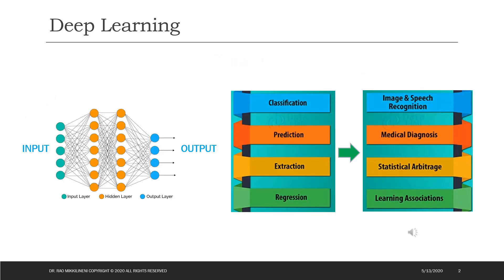Deep learning has delivered a variety of practical uses in the past decade, from revolutionizing customer experience, machine translation, language recognition, autonomous vehicles, computer vision, text generation, speech understanding, and a multitude of other AI applications. The neural network learns by generating an error signal which measures the difference between the predictions of the network and the desired values.